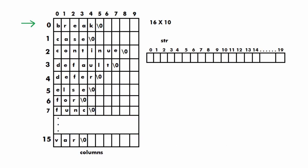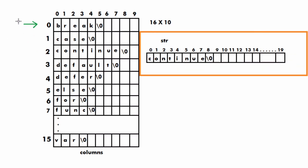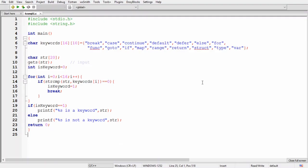Let's understand how we can solve this problem. We are going to take a two-dimensional array of 16 rows and 10 columns, and store each keyword from the question — like break, case, continue — in this array. After this, we will take another character array 'str' of 20 elements, since the input string length may be between 0 to 20. We take the input, then search the 2D array for a match. If it matches, we print the word is a keyword; otherwise, we print it is not a keyword. Let's see the solution in C first, then Java and Python.